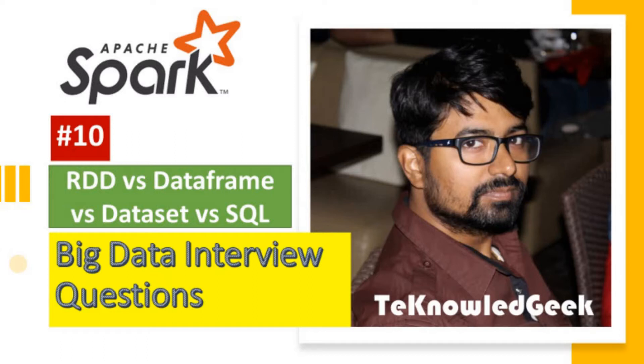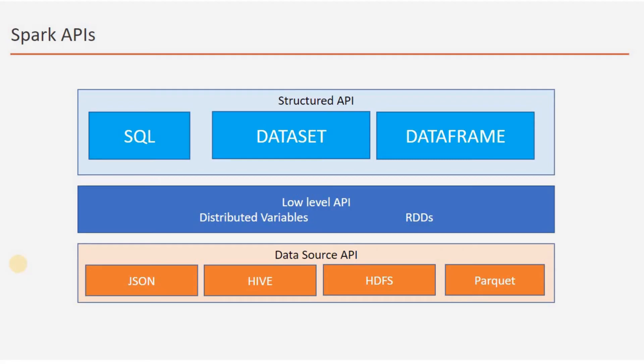Let's first discuss the various abstraction layers and the APIs used in Spark. RDDs are the most fundamental and low-level API in Spark. Being a low-level API, most of the control and optimization techniques depend on the developer — the developer needs to know how to do it, as Spark doesn't help with that. And as it is type-safe, it can be used in type-safe languages like Python and R.